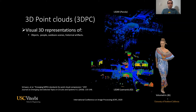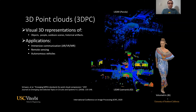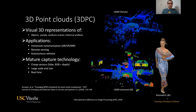3D point clouds are visual representations of objects, people, outdoor scenes, and historical artifacts. Applications include immersive communications, remote sensing, and autonomous vehicles. Since the technology to capture point clouds has matured enough, now they can be acquired at large scale and size, and also in real time. Therefore, there is an emerging need for compression of this type of data.